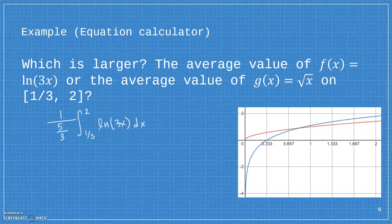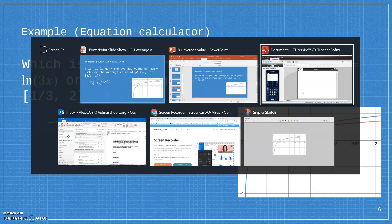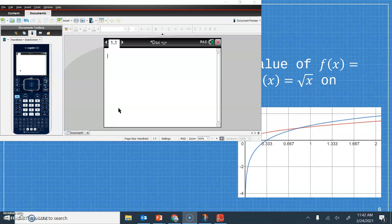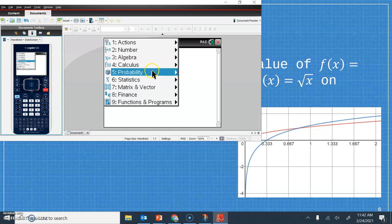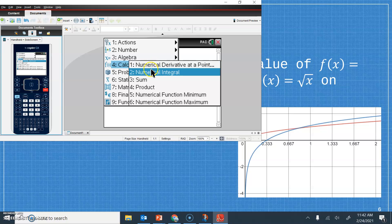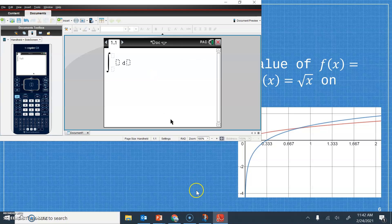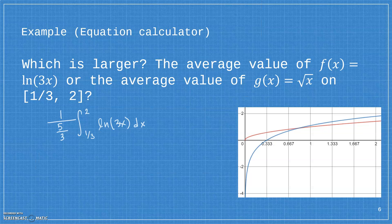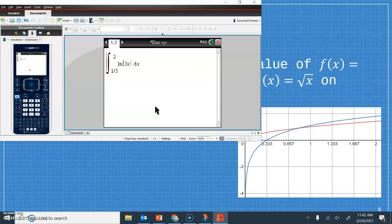So I'm going to grab a calculator because that's not something I would be expected to be able to do. I mean, I could do it by hand, but I'm not going to know how big the value is by hand. So just a reminder on how to do integrals on your calculator. Menu, calculus, and numerical integral. So then I'll go from 1 3rd to 2 of natural log of 3x. And then I'm going to divide by 5 3rds or multiply by 3 5ths.